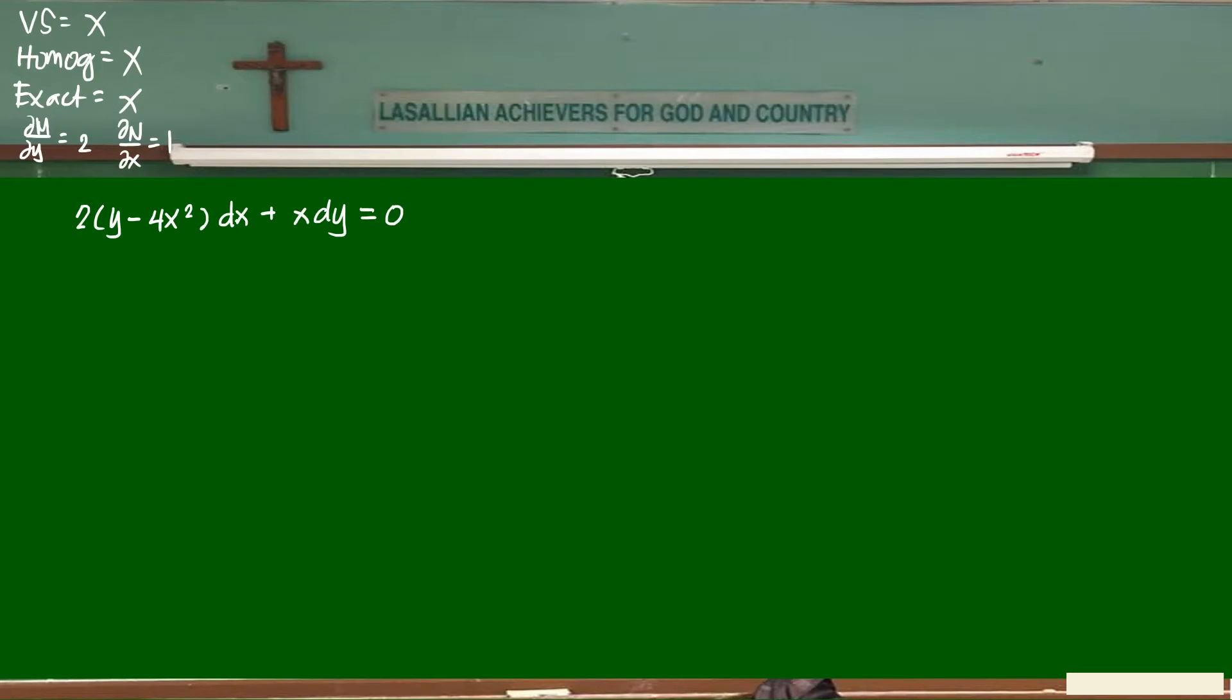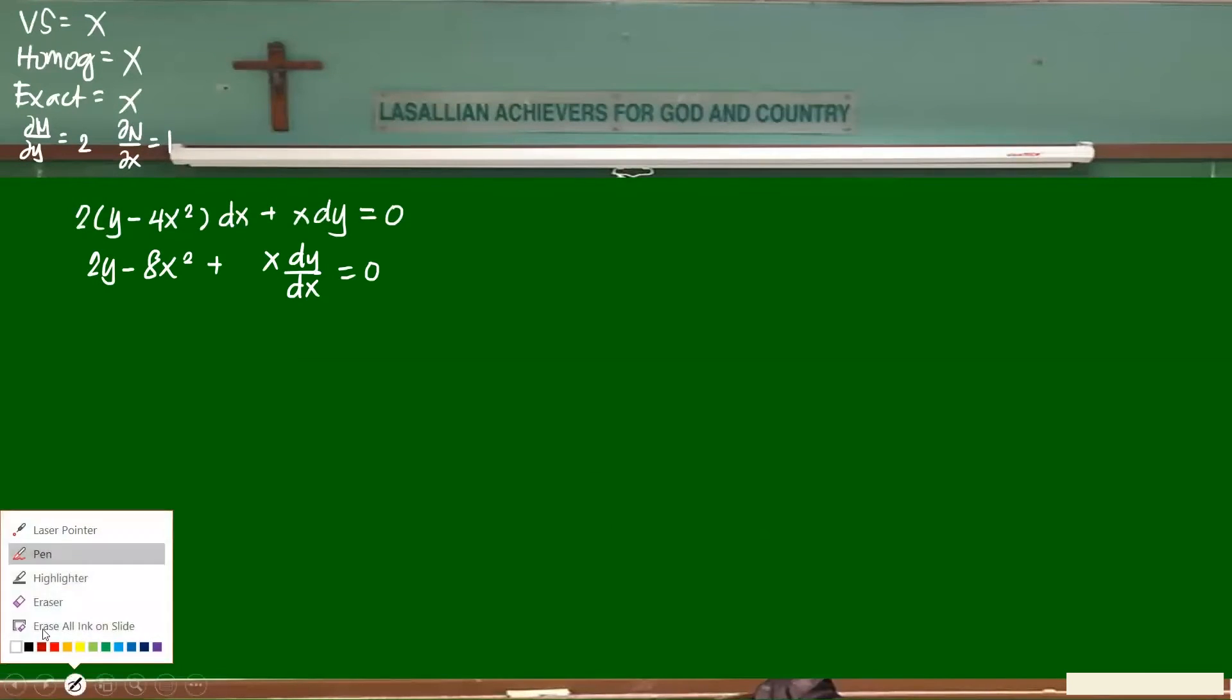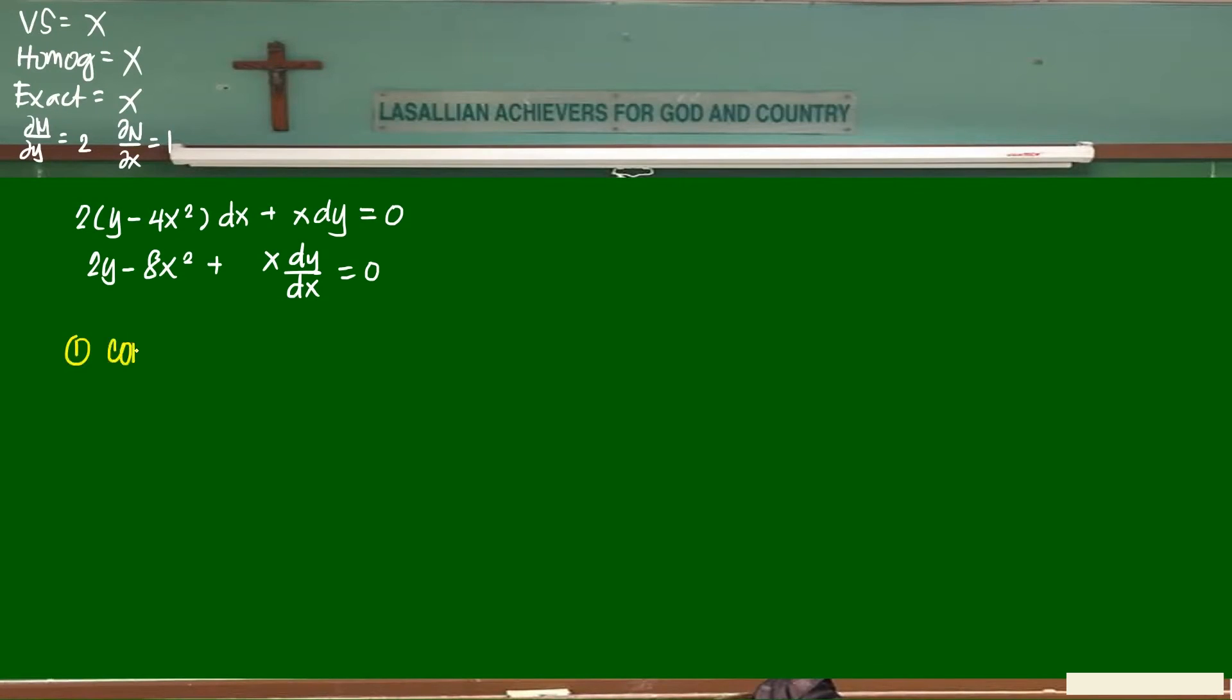So to test if it's linear, X is multiplied to two variables. If I divide everything by 2y, that might be harder. Two are beside it. But if I divide everything by 2X, it might be easier. So 2y - 8X² + X·dy/dx over. Step number one is convert to standard form and test for linearity.